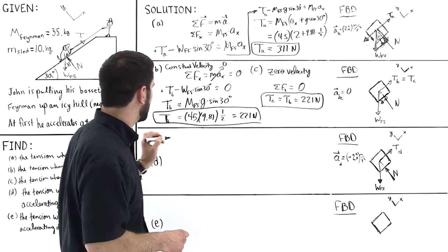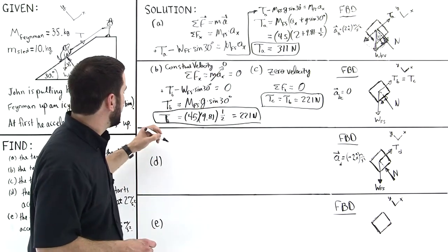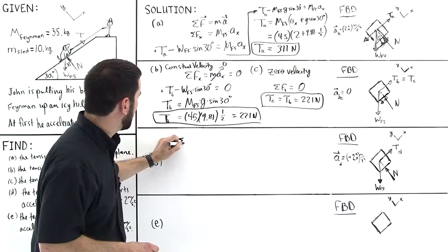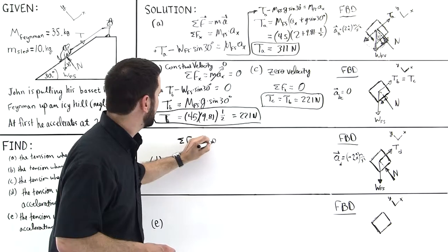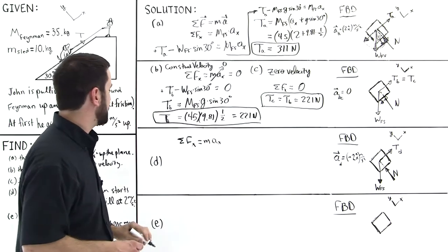Again, we're just considering the X components. So we'll start by saying the sum of the X components is equal to mass times the acceleration in the X direction.